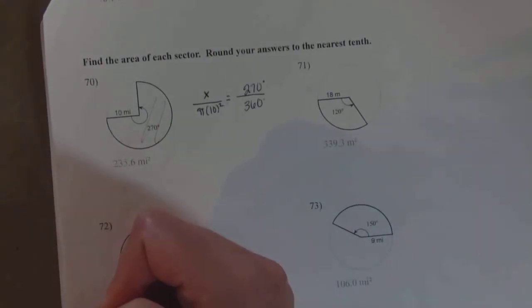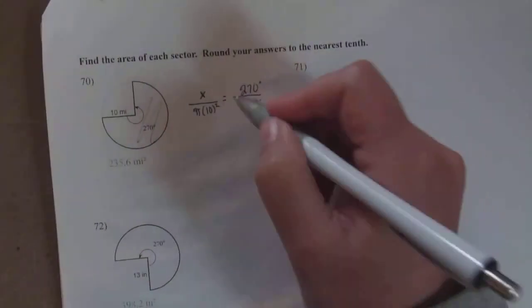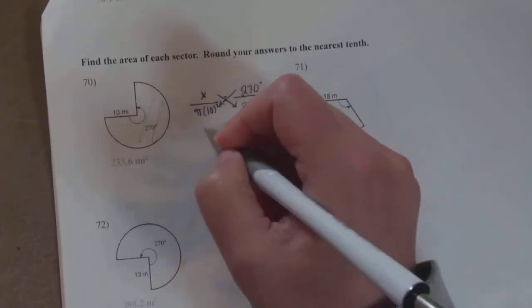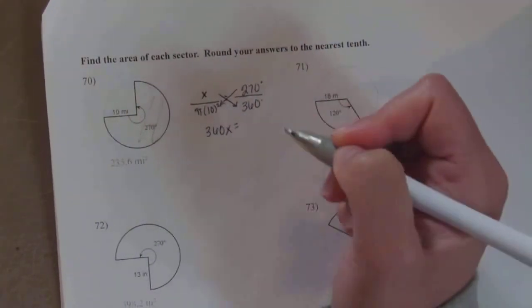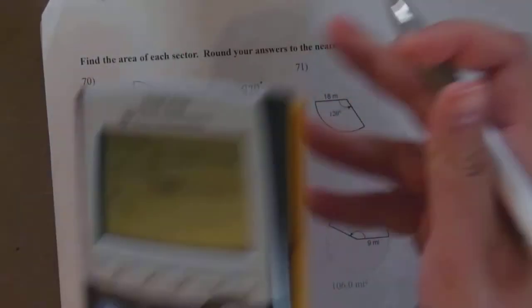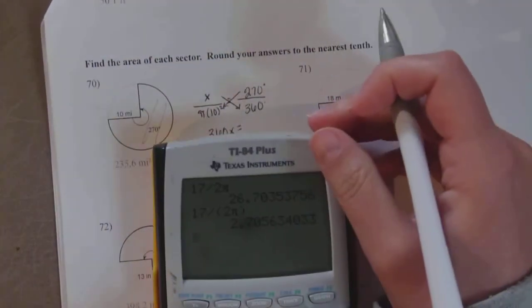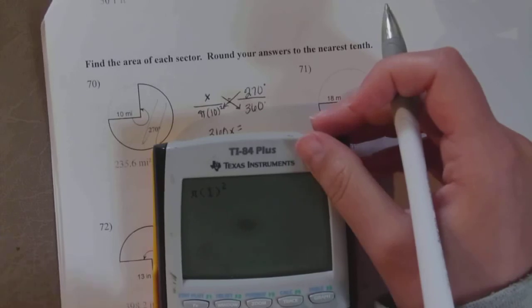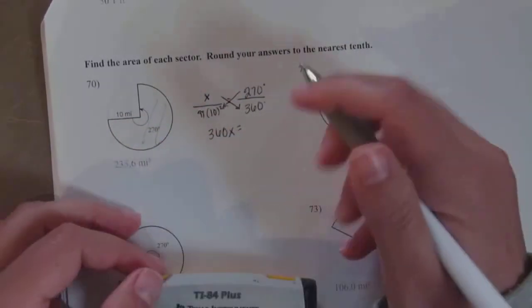That equals the measure of the central angle - that's this 270 degrees - over the degrees of the whole circle. This will always be 360. Now when you're solving a proportion, you're just going to cross multiply and solve. So we get 360x equals π times 10 squared times 270.